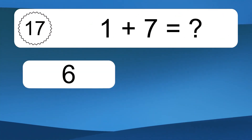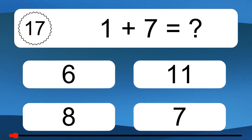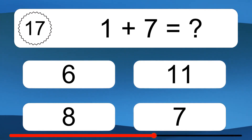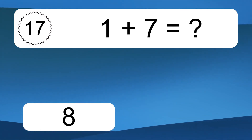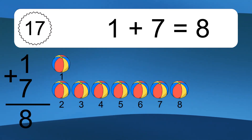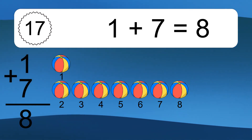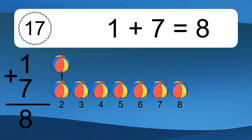1 plus 7 equals what? 1 plus 7 equals 8. Let's count it: 1, 2, 3, 4, 5, 6, 7, 8.